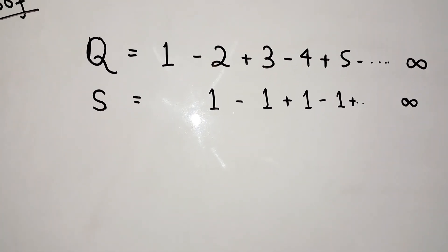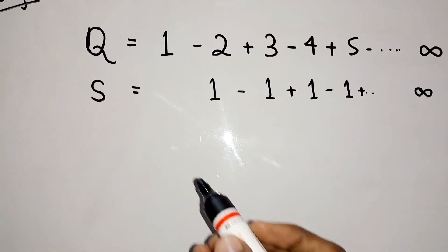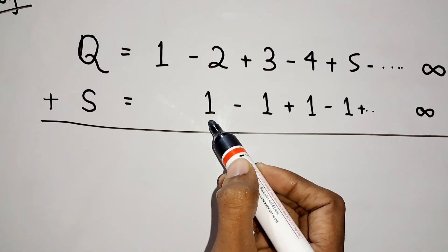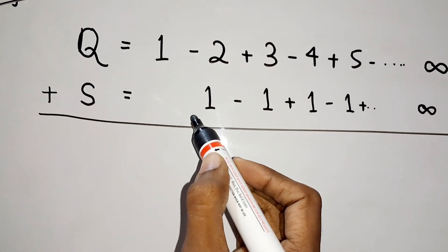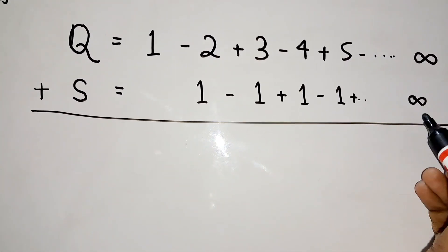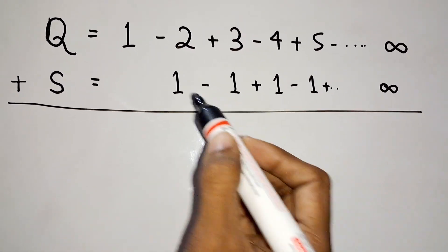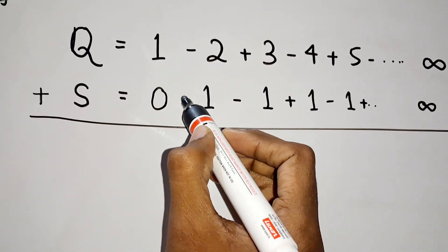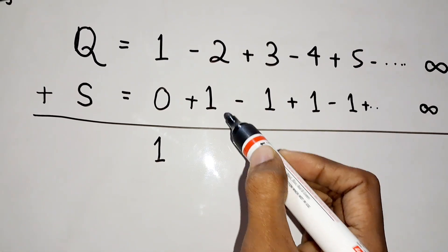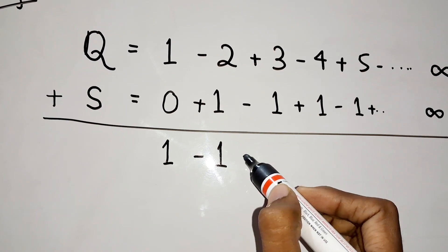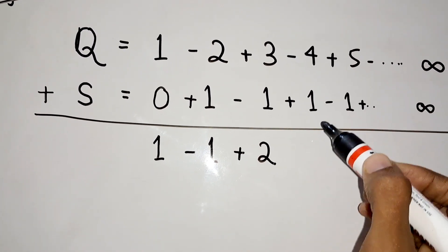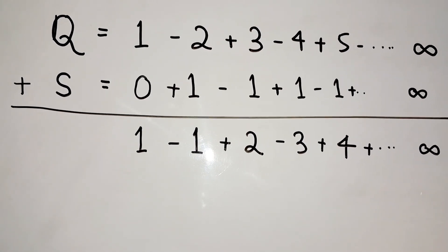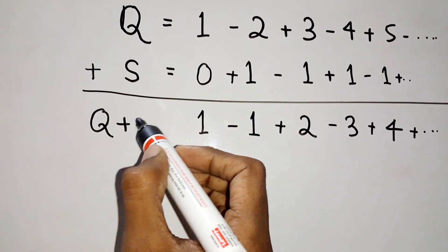Now what we can do is add both of these series — Q and S. You can observe that we have shifted S one place to the right, but the series is the same. Adding term by term: 1 plus 0 is 1; minus 2 plus 1 is minus 1; 3 minus 1 is 2; minus 4 plus 1 is minus 3; 5 minus 1 is 4; and so on up to infinity. So Q plus S equals this new series.